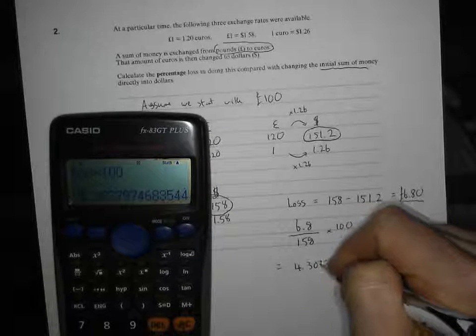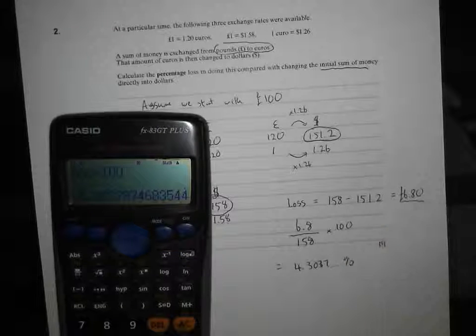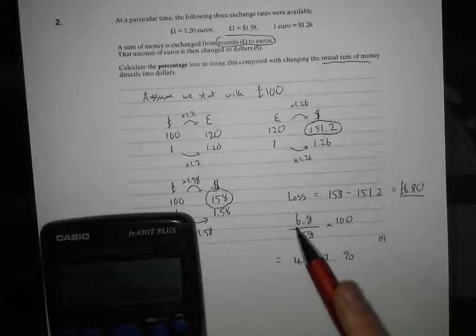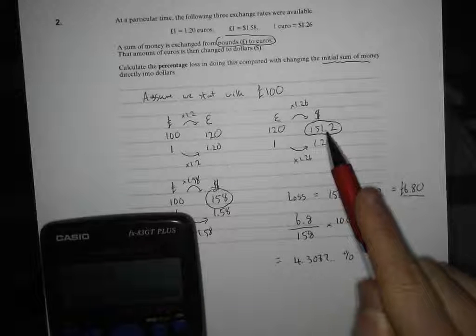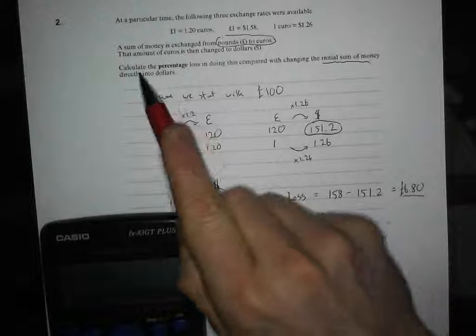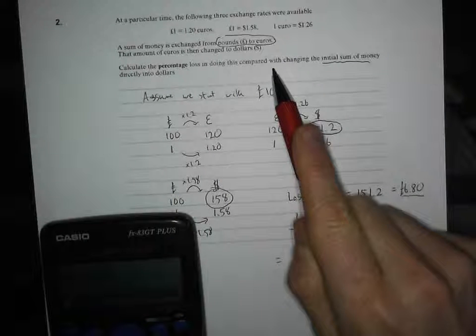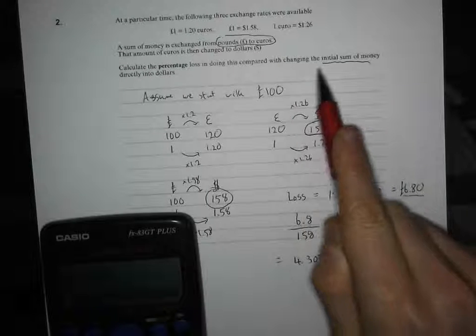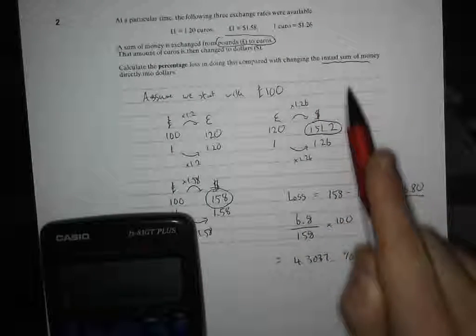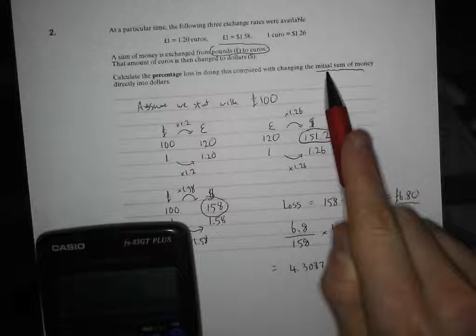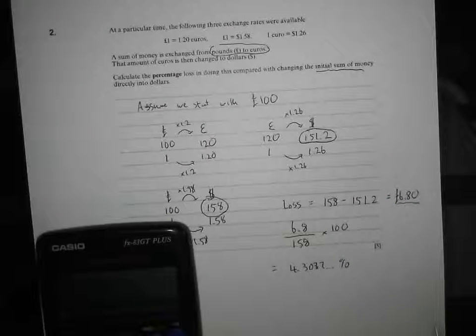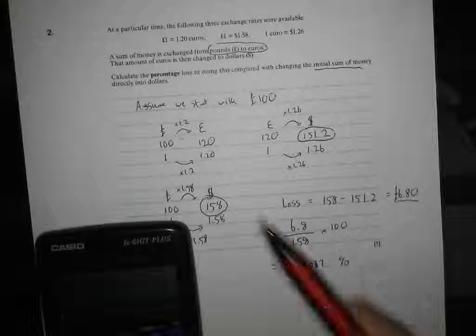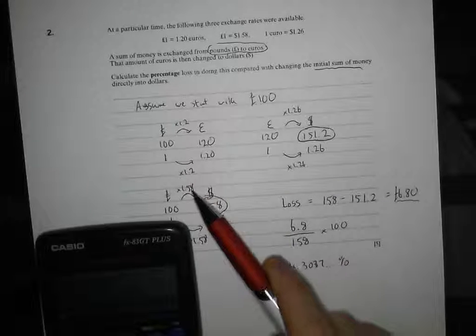The reason I think that's a bit ambiguous is, some people might think that you're going to divide that by the 151.2. But I think there, calculate the percentage loss in doing this, compared with changing the initial sum of money. That suggests to me that doing it the initial sum of money is the original thing that you're doing, and you're using that for the comparison. So, that's my answer. 6.8 divided by 158 times by 100. But this way of setting out exchange rate questions, I think, is the way forward for these ones.